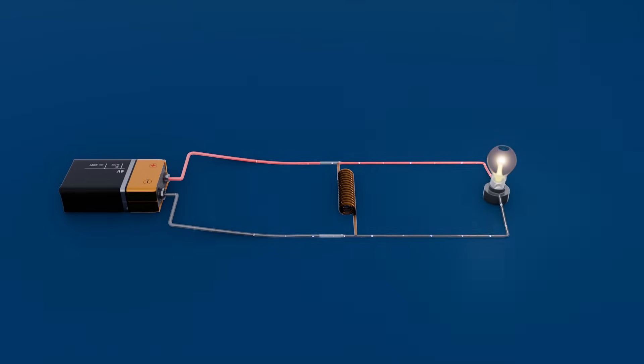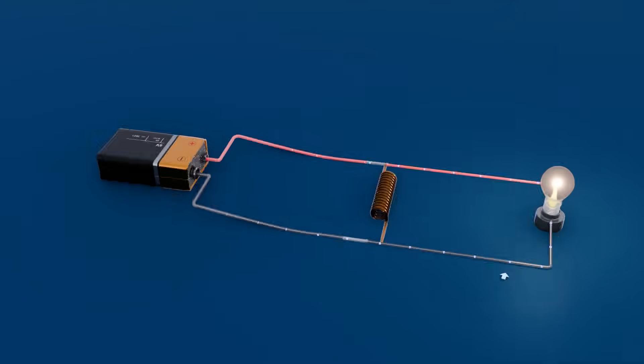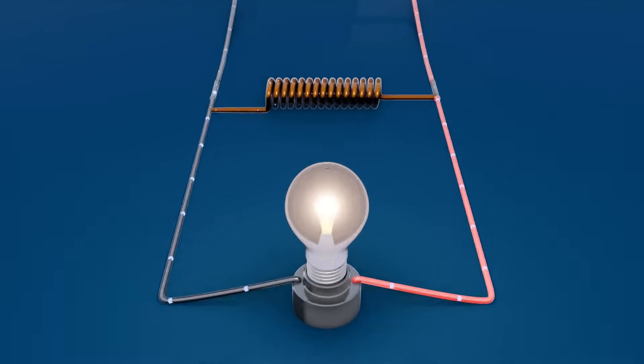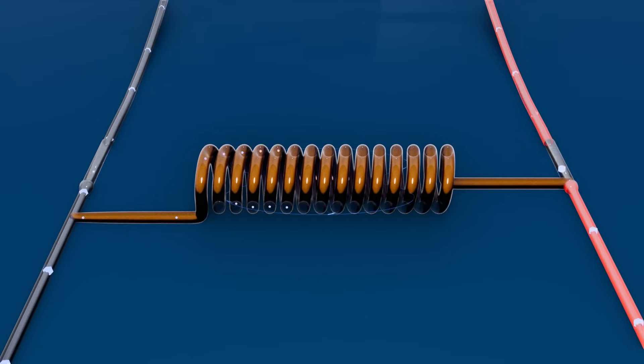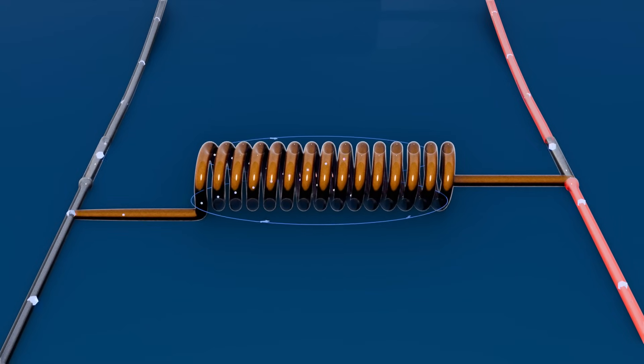When we apply a current to the circuit, the current will first flow through the lamp, powering it up. Little to no current will flow through the inductor as the resistance is too large. The current takes the path of least resistance.